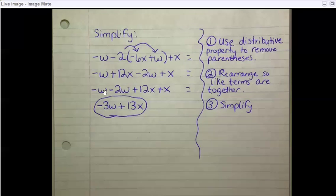And then I need to rearrange these so the like terms are together, because right now I have w, x, w, x, but let's put the w's together and the x's together and simplify. So negative w minus 2w, which is like negative 1 minus 2 is negative 3w, and 12x plus x, or 12 plus 1, is 13x. And I can't simplify this any further, so I'm done.